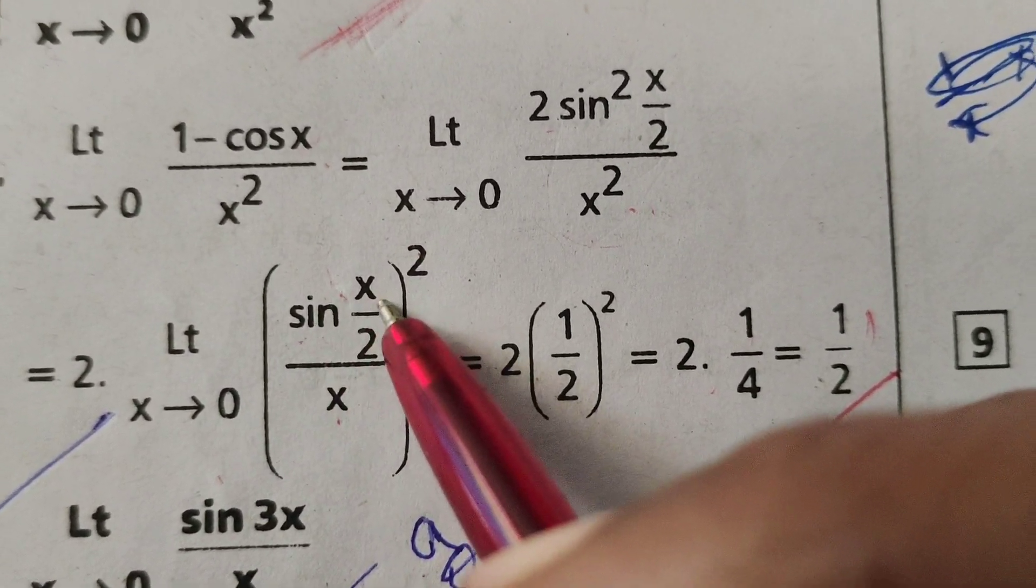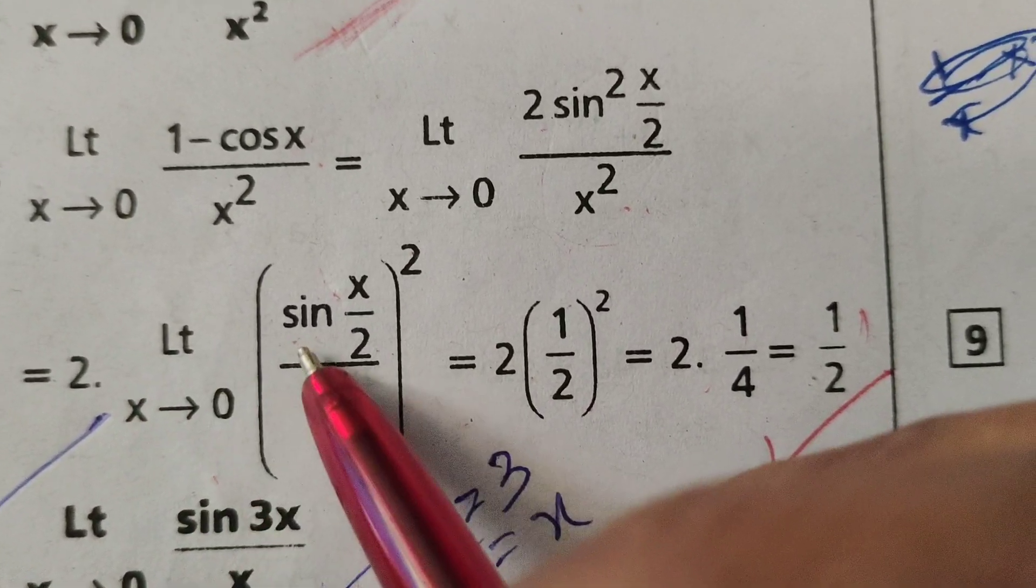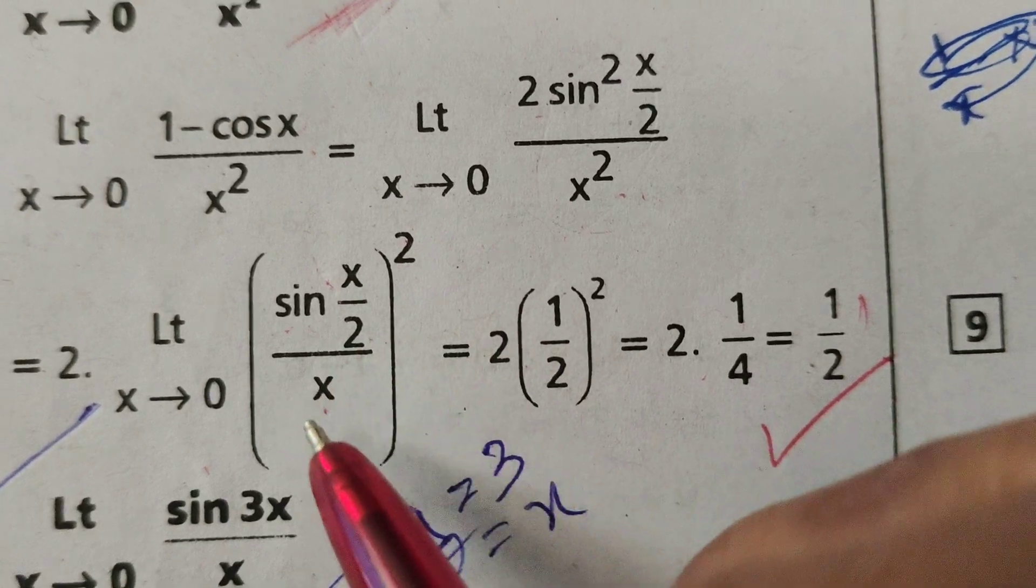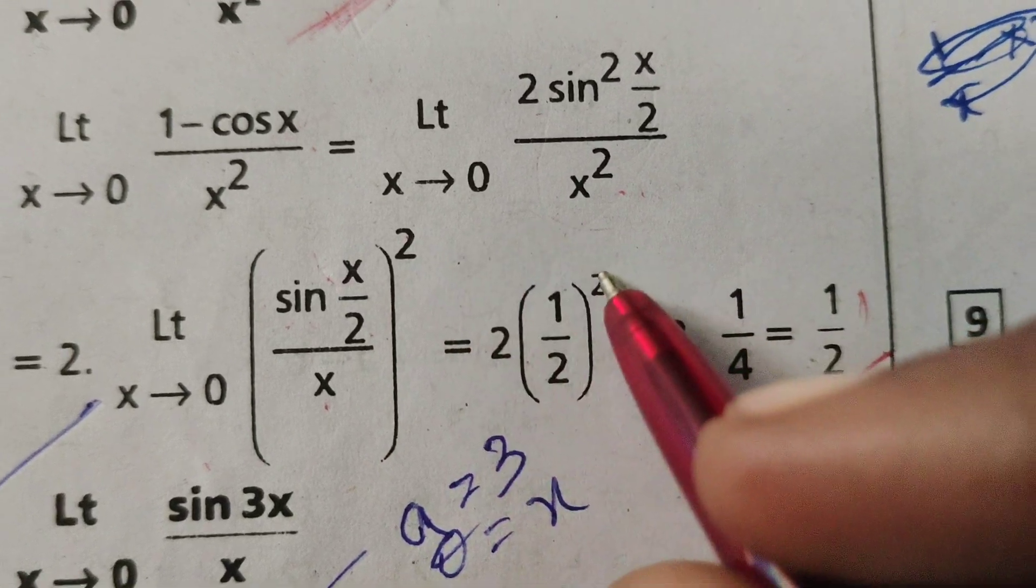sin x by 2 by x means right, limit x tends to 0, sin x by 2 by x means right, 1 by 2, 1 by 2 whole square.